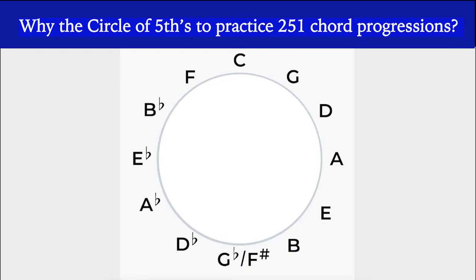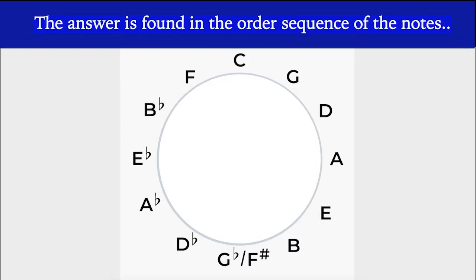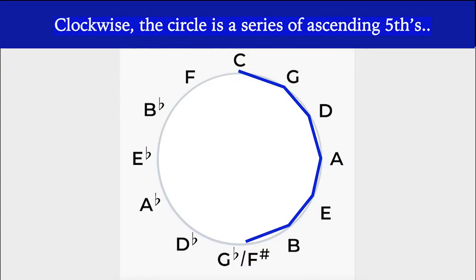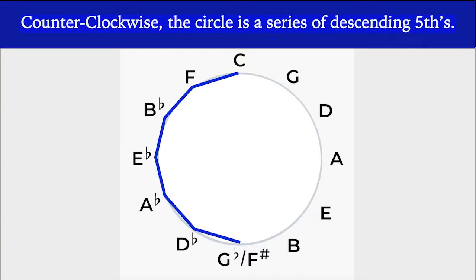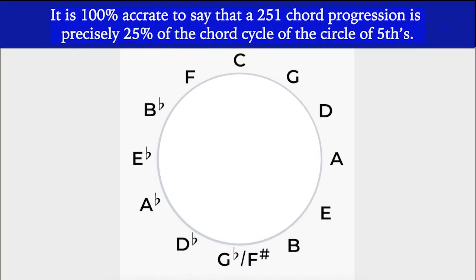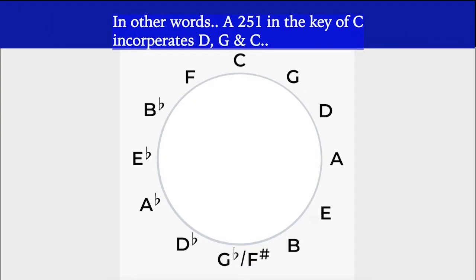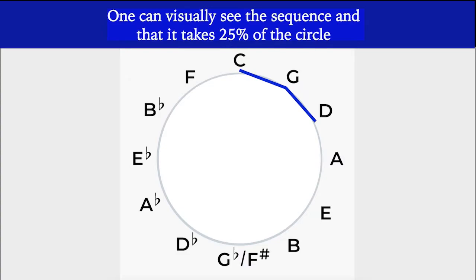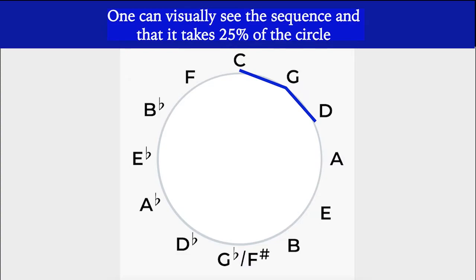In the first video series I did on this, I went to A flat, because that's going to give me the other side of the coin, or the other side of the circle of fifths. Why the circle of fifths to practice 2-5-1 chord progressions? The answer is found in the order of the sequence of the notes. Clockwise, the circle is a series of ascending fifths. Counterclockwise, the circle is a series of descending fifths, or ascending fourths. It is 100% accurate to say that a 2-5-1 chord progression is precisely 25% of the chord cycle of the circle of fifths.